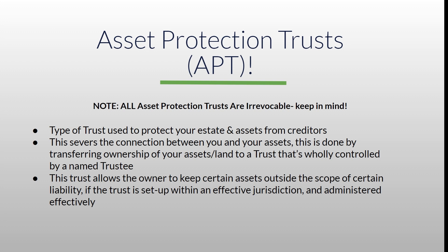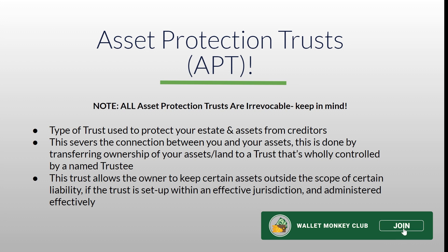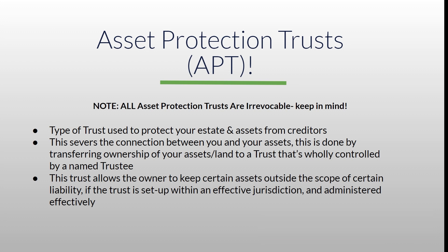This type of trust is used to protect your estate and assets from creditors. It severs the connection between you and your assets by transferring ownership — land, etc. — to a trust wholly controlled by a named trustee. The trust allows the owner to keep certain assets outside the scope of certain liability, provided the trust is set up within an effective jurisdiction and administered effectively. Yes, it could still fail if set up incorrectly.